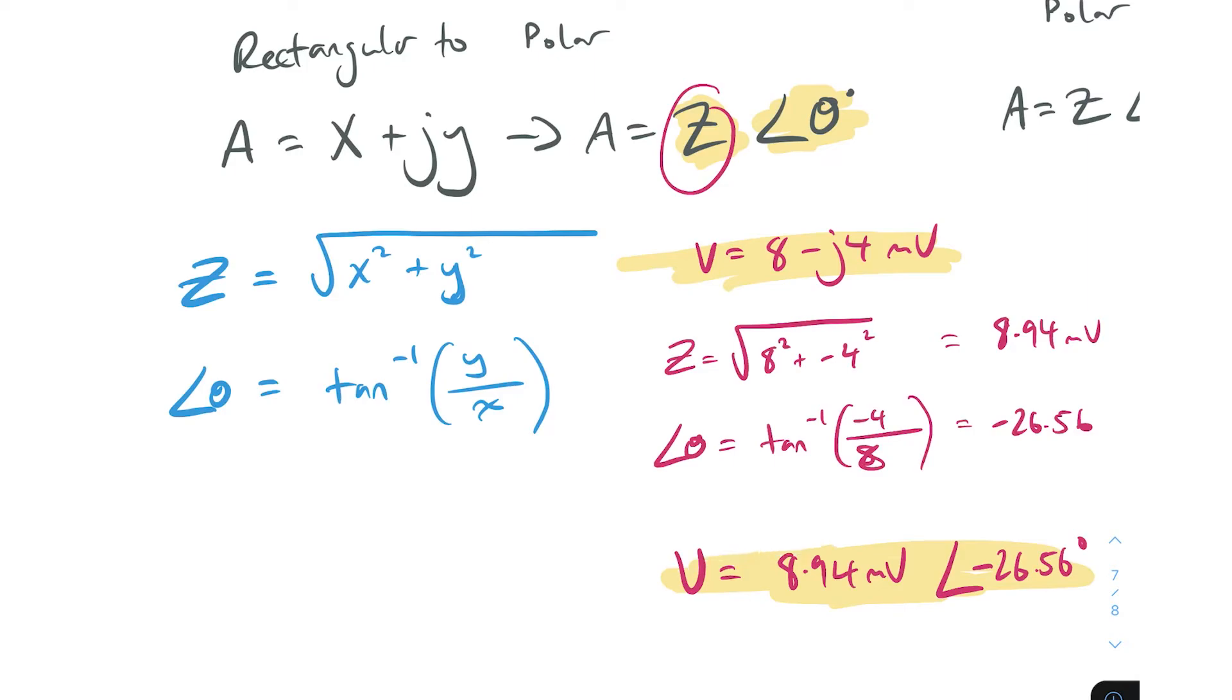What we would say is that if our total voltage was 8 minus j4 millivolts, then we would say voltage equals 8.94 millivolts at a phase shift of negative 26.56 degrees. That's it. You can see it's not complicated at all. Both these two things represent the exact same thing - one's in rectangular format, 8 minus j4 millivolts, and the other one's in polar format, 8.94 millivolts at an angle of negative 26.56.